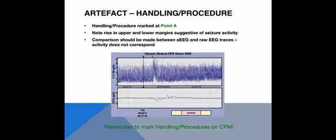Looking at this trace, without the marker — the green line — you might think the baby had a seizure, as the baseline and upper limit have both risen at point A. But when we compare that with the raw EEG at the bottom, it doesn't correlate; we can't see the spike or rhythmical pattern there. This highlights the importance of adding markers for procedures and interventions.